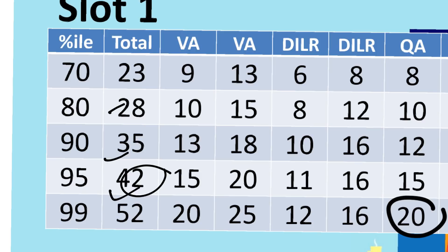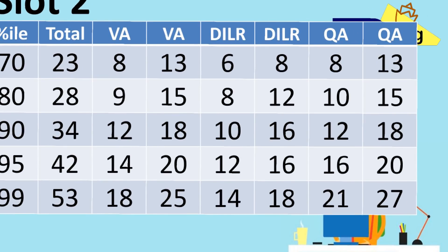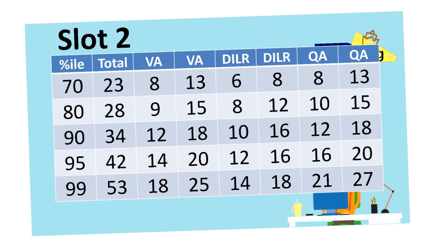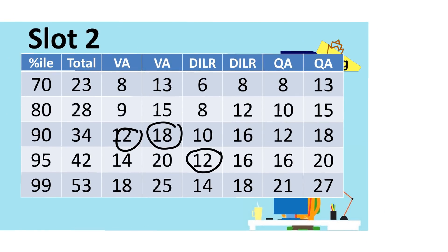You need to know your individual section percentile and your overall percentile. For Slot 2 students, that's your graph. For example, if I did 18 verbal questions and expect 12 correct, I'm expecting 90 percentile in verbal. DI in Slot 2 — there were 3 sets you could easily complete, so 12 correct gives around 95 percentile. Quant was simpler in Slot 2 compared to Slot 1 — if I did 21 questions right, I'm expecting 99 percentile. Overall I'm expecting around 95–99 percentile across sections.